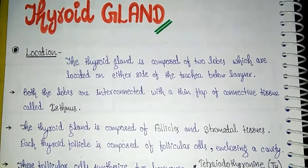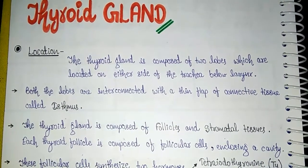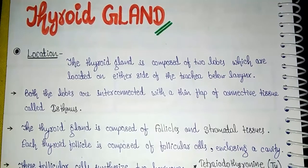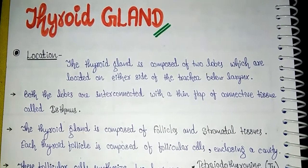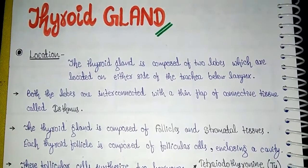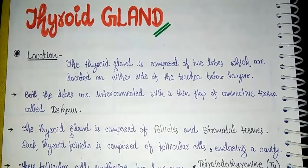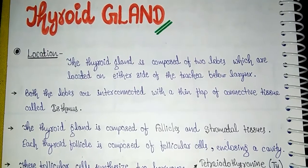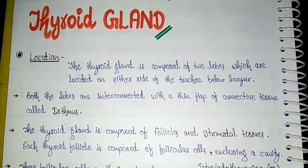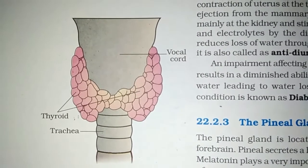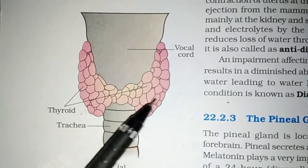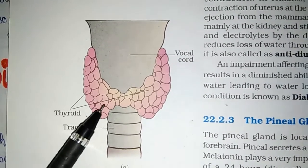First of all, where is the thyroid gland located? Thyroid gland is a bi-lobed structure and it is located in the neck region. The two lobes present on both sides of the trachea are connected by a connective tissue called isthmus. Here is a diagrammatic view of the thyroid gland showing this bi-lobed structure around the trachea, with both lobes connected by the isthmus.